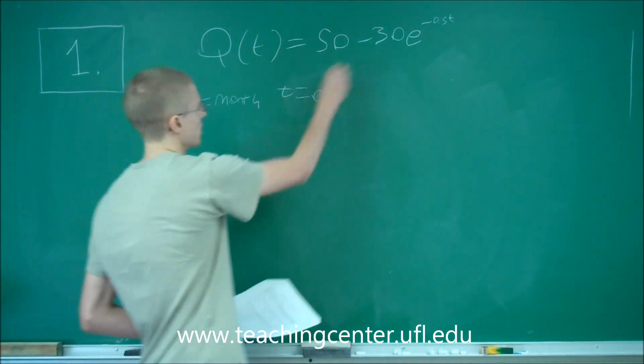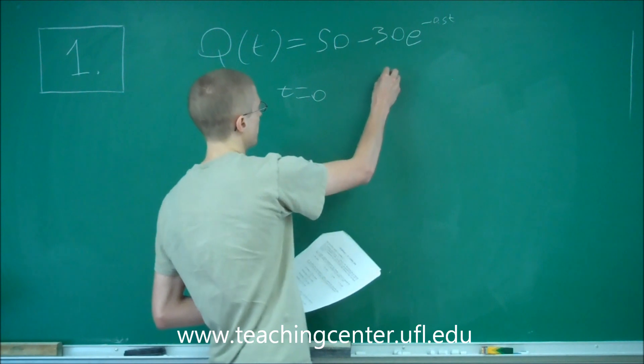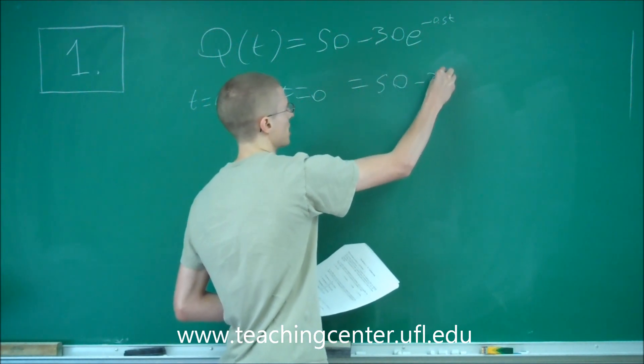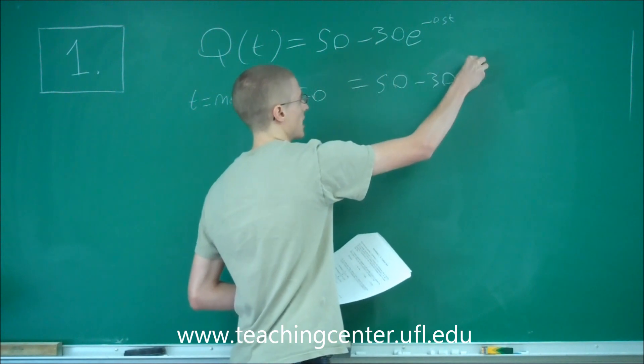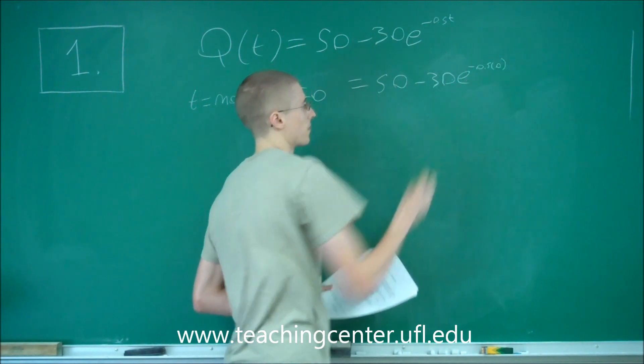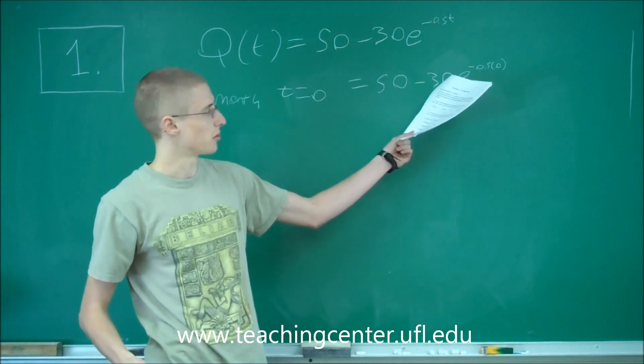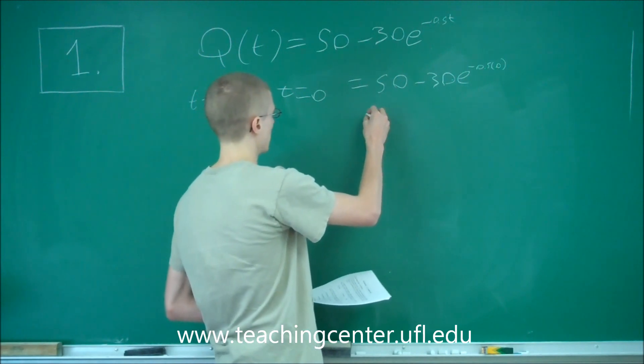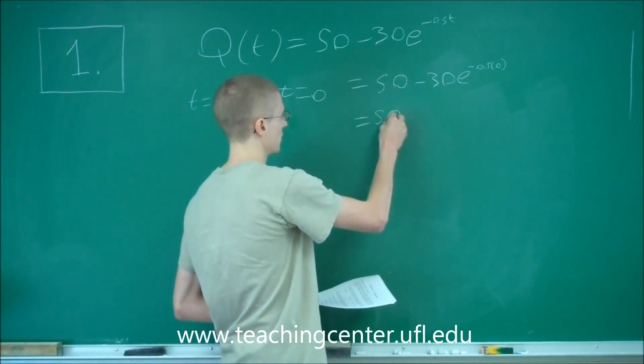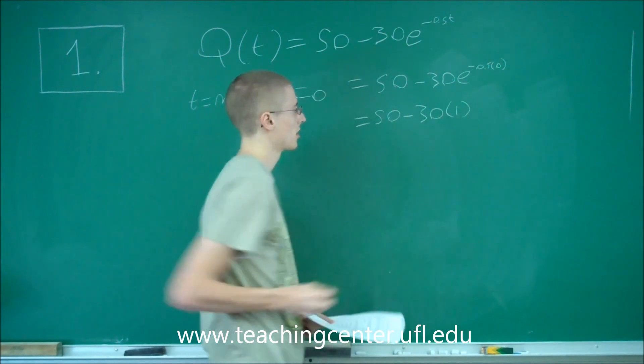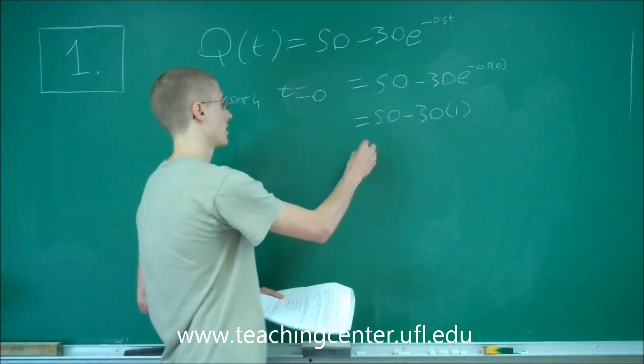And if we plug 0 in for the equation, we're going to get 50 minus 30e raised to the negative 0.5 times 0. Now, whenever we have an exponential raised to 0, that equals 1. So, we're left with 50 minus 30 times 1. 50 minus 30 is 20.